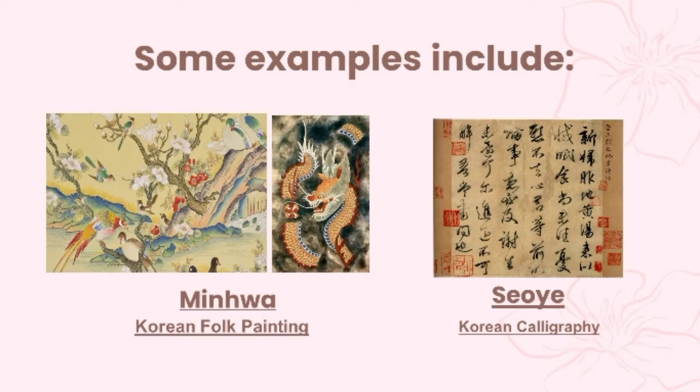On the right side is calligraphy in Korea called Seoye. It's the Korean tradition of artistic writing in Hangul, which conveys the artist's emotions while illustrating the strength, purity, and perpetuity of this Asian tradition.